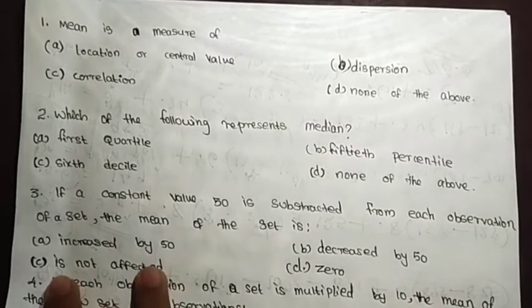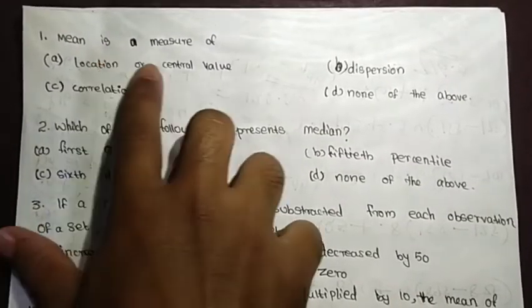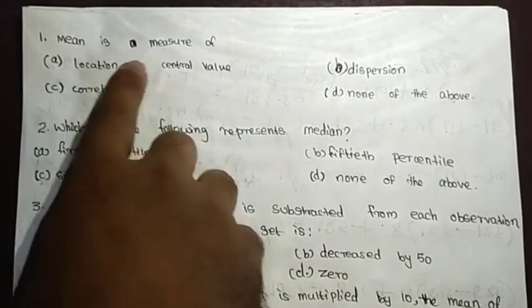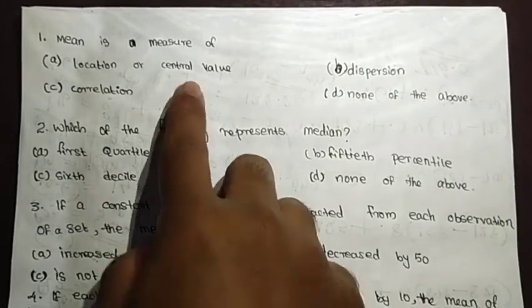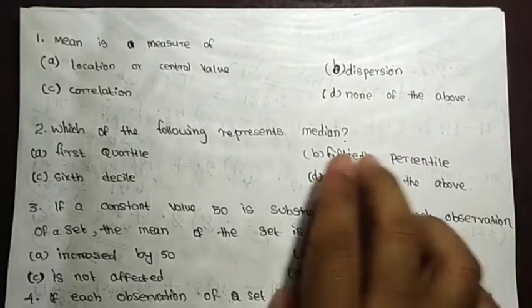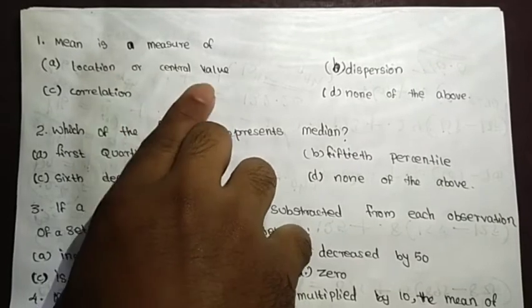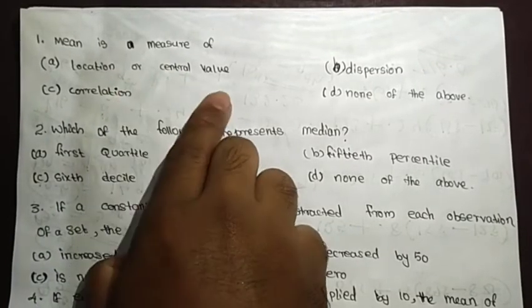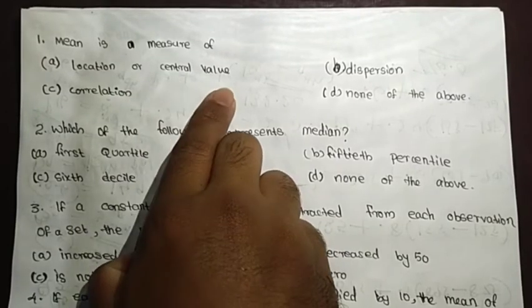Question 1: The mean is a measure of location or central value. The correct answer is that the mean is a measure of location or central value.